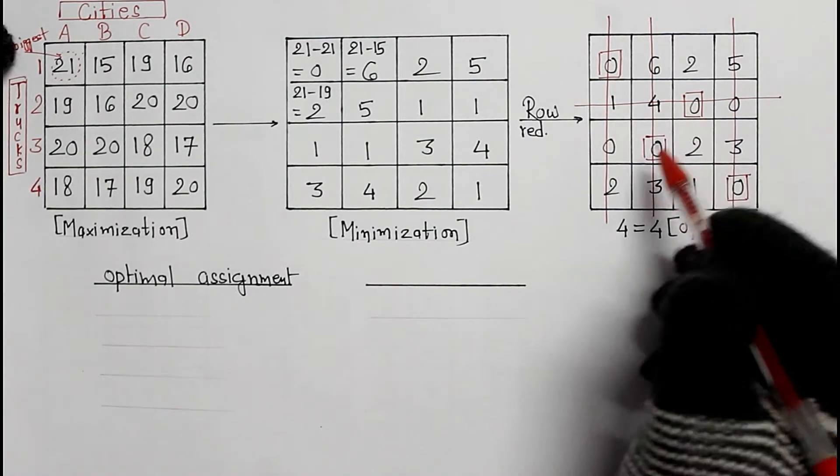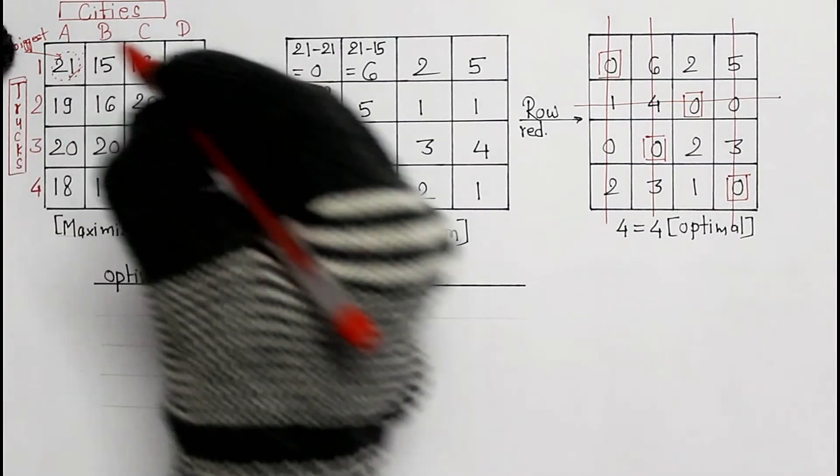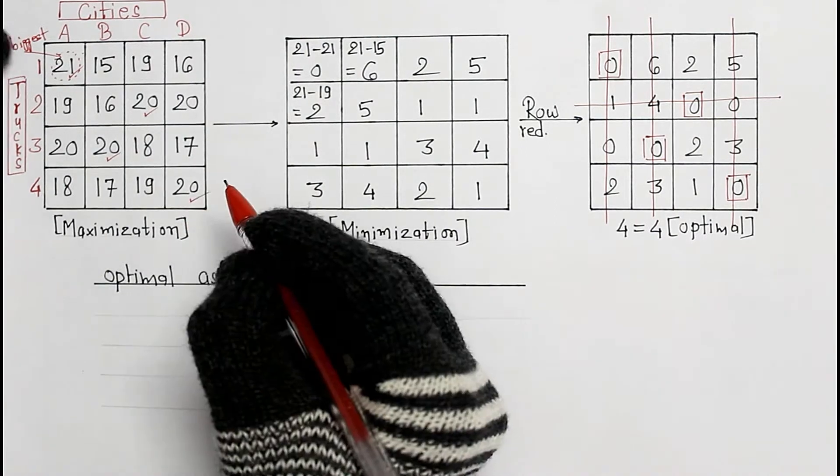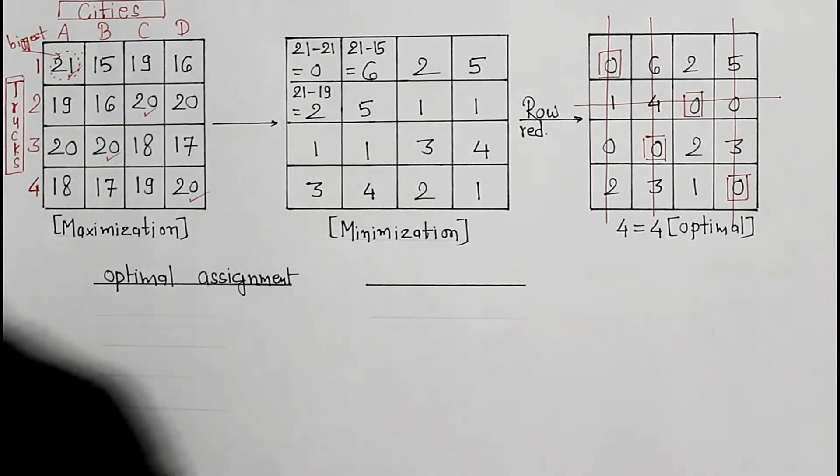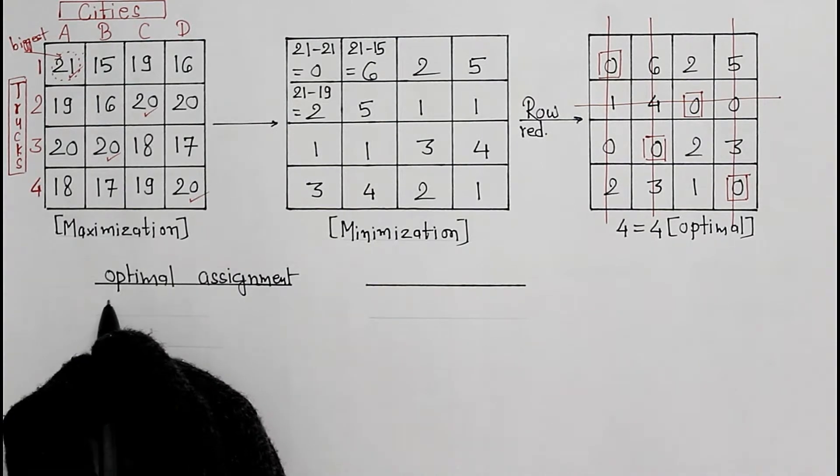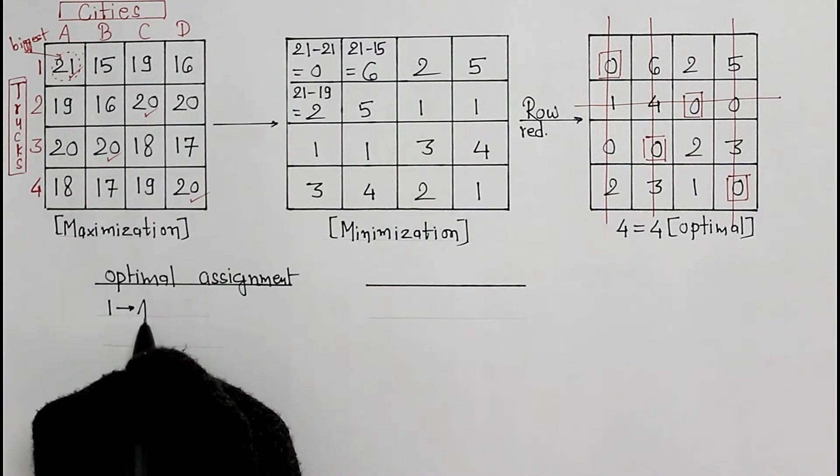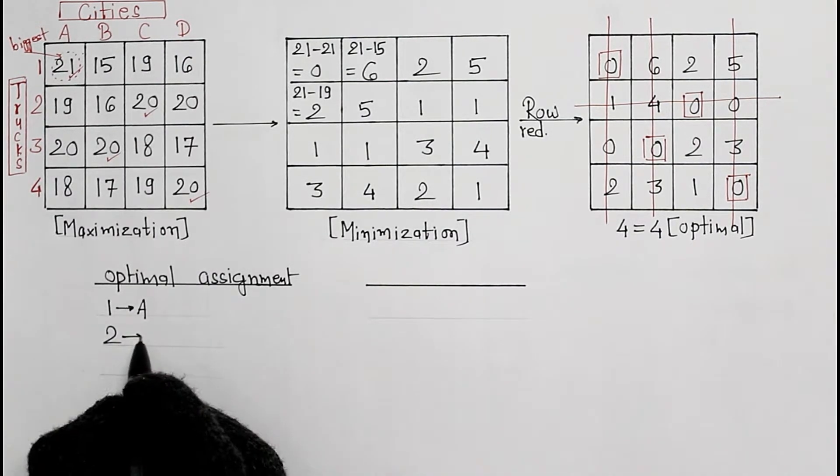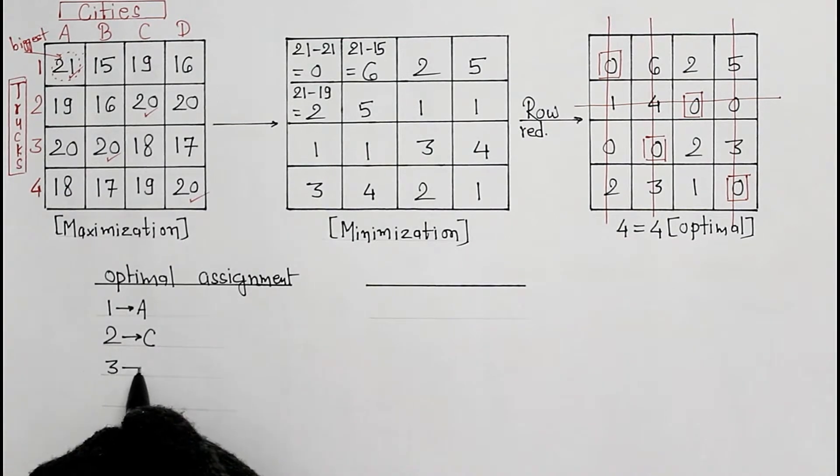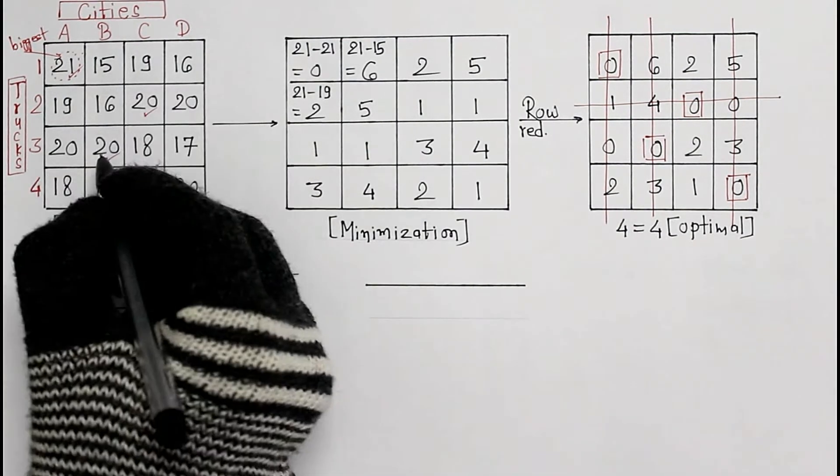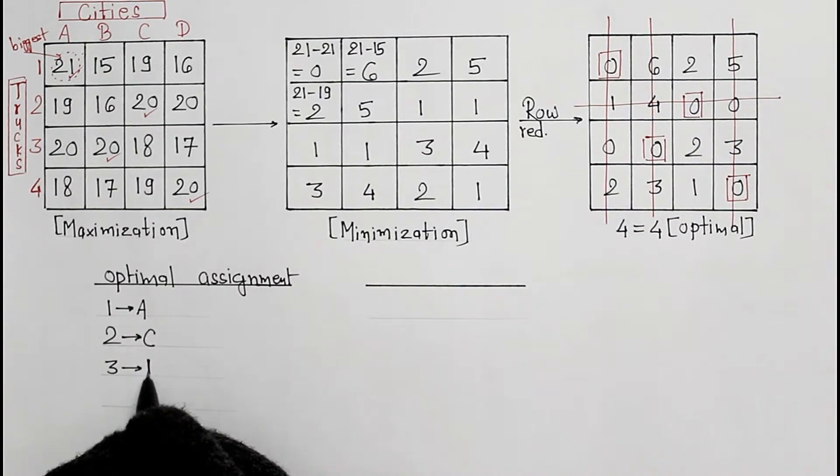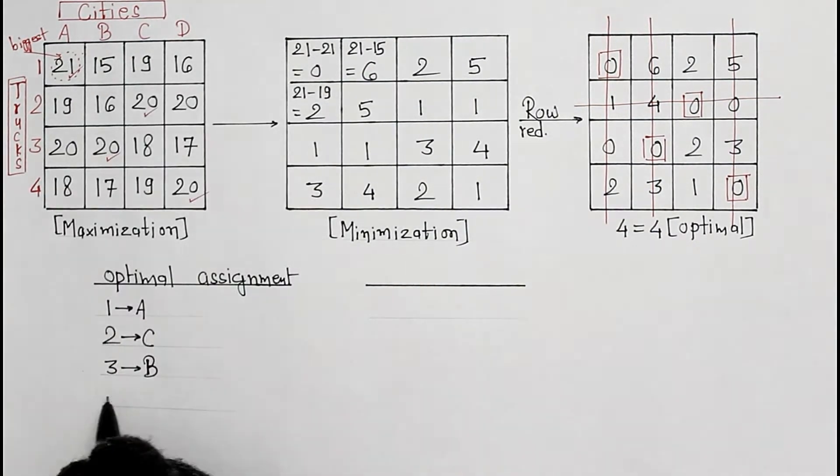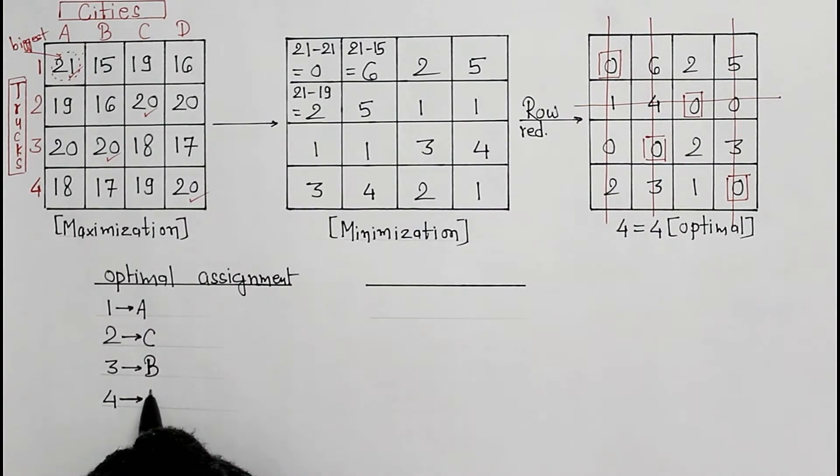Mark the corresponding cells. Here, this one, this one, and this one. So first one for city A, second for city C, third for city B, and fourth for the last city D.